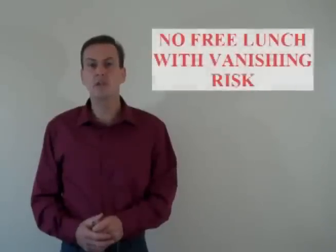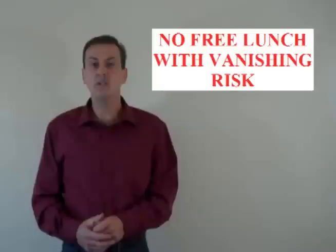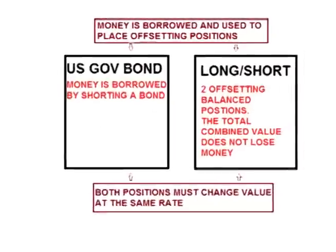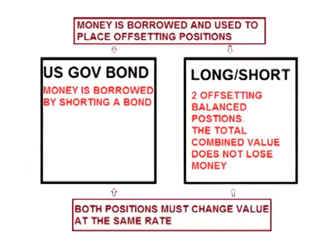One of the key assumptions of the Black-Scholes formula is the No Riskless Arbitrage Argument, which says that one cannot freely profit without taking risk. In other words, one cannot set up a situation where they will make more money than a riskless fixed income investment without there being some risk of losing money. If that were not the case, one would be able to engage in riskless arbitrage.